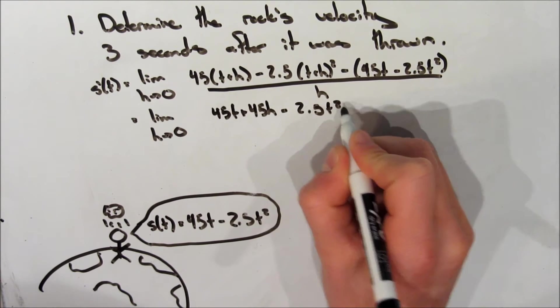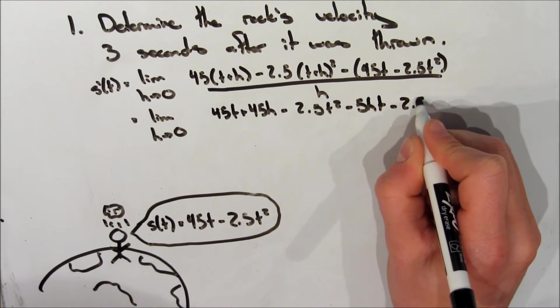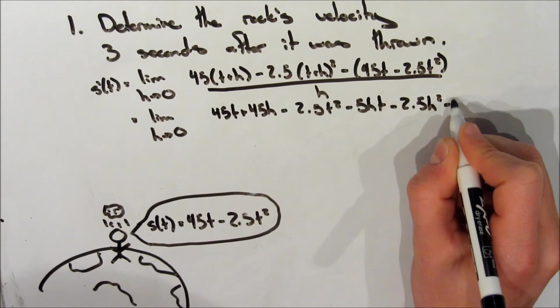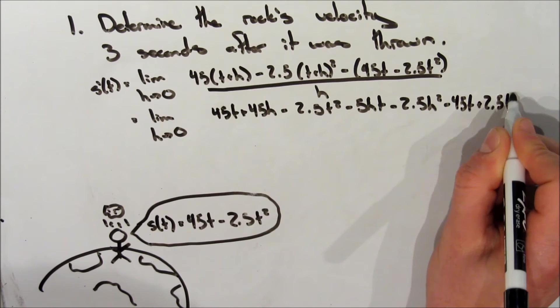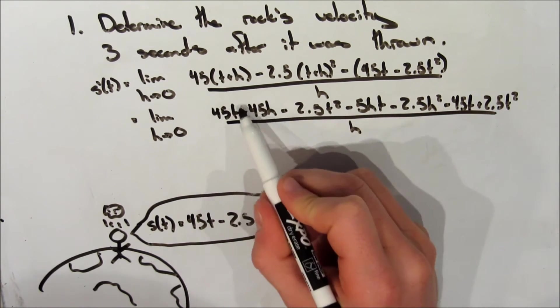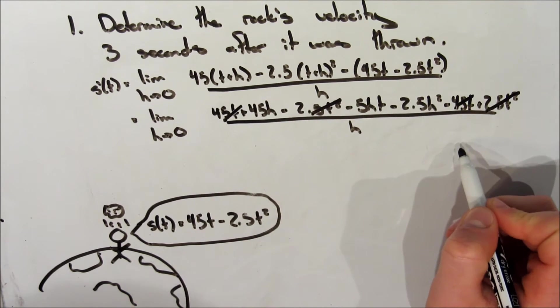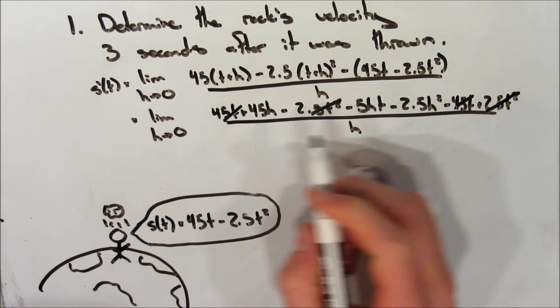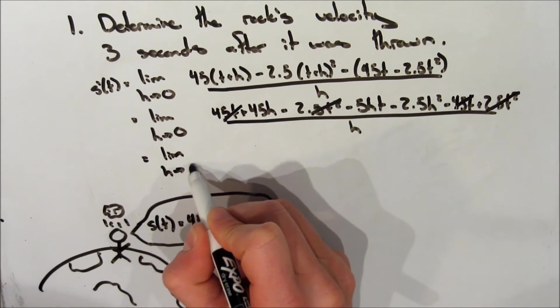So it will be 45t plus 45h minus 2.5t squared minus 5ht minus 2.5h squared minus 45t plus 2.5t squared, and all of that is going to be over h. So now we can cancel out our 45t's and the 2.5t squareds. And now we can go to the next line.